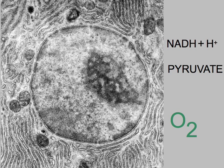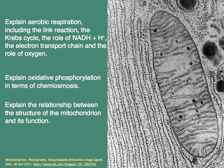In the last lesson we pointed out that in the presence of oxygen, pyruvate and reduced NAD have a different fate — they enter into the mitochondrion. Welcome again. In today's lesson we explain aerobic respiration, including the link reaction, the Krebs cycle, the role of NADH and H+, the electron transport chain, and the role of oxygen. We also explain oxidative phosphorylation in terms of chemiosmosis.